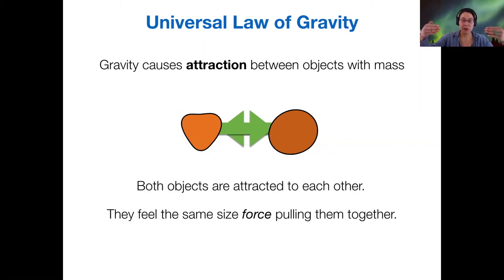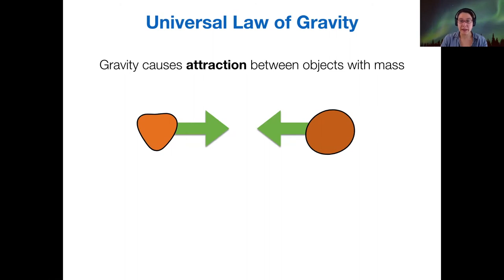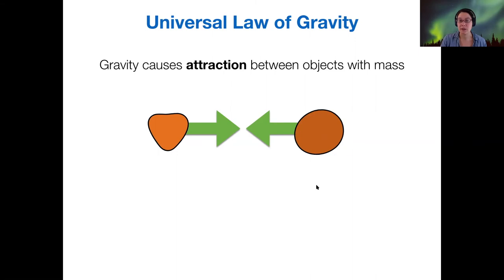Since both objects are attracted to each other, if you just had two objects floating in space, the force of gravity would over time pull them together. They feel the same size of force. That's what's shown by the length of the arrows here, the magnitude of the force that's pulling them toward one another. Both objects experience the same force, but in opposite directions.